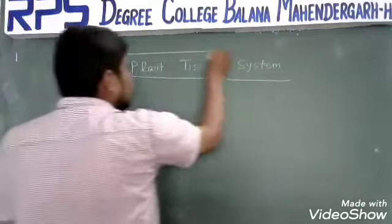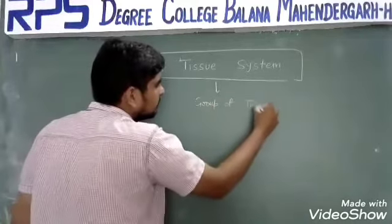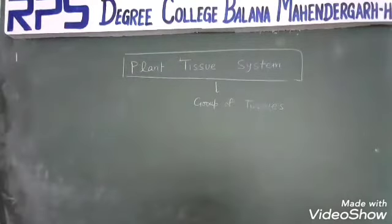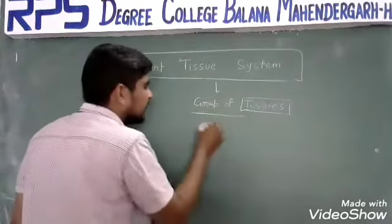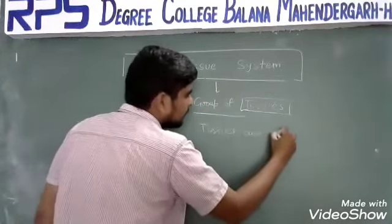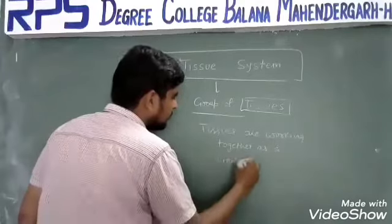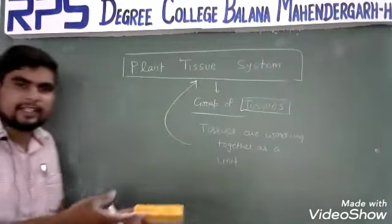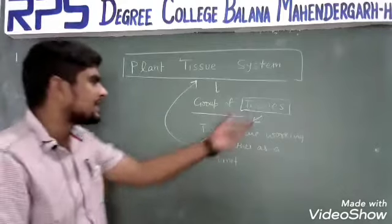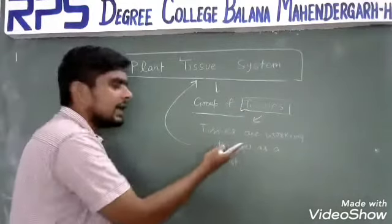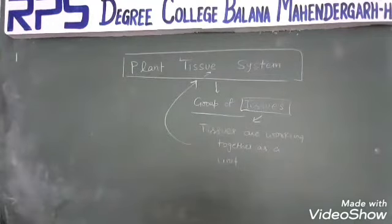A tissue system is a group of tissues. Whatever be the type of tissues, if they are working together as a unit, they will be called a tissue system. It is a system made up of different kinds of tissues. These tissues which are making a system may be similar or dissimilar — that group will be called a tissue system.